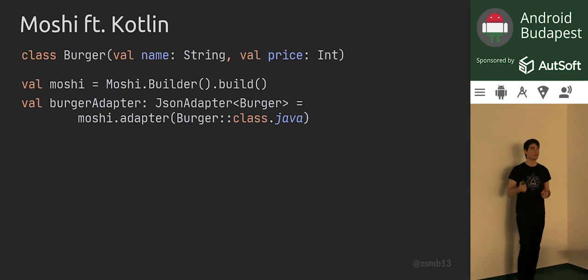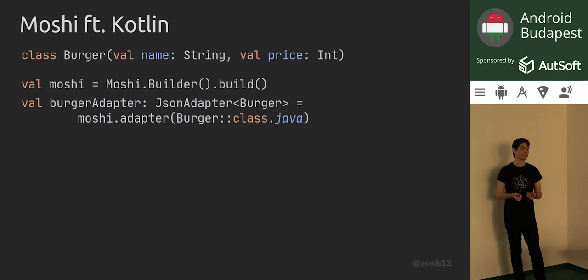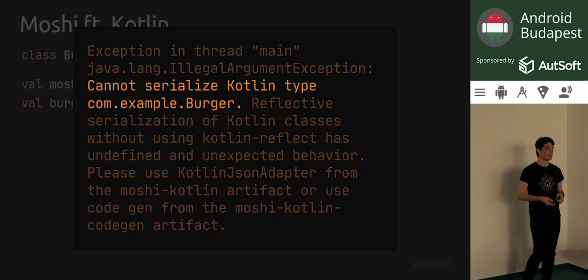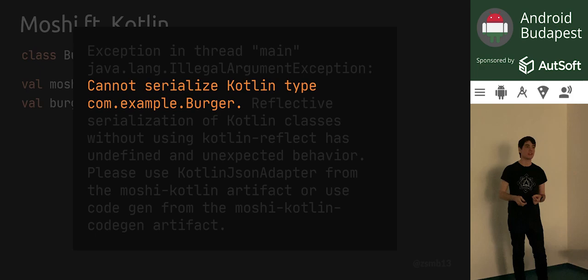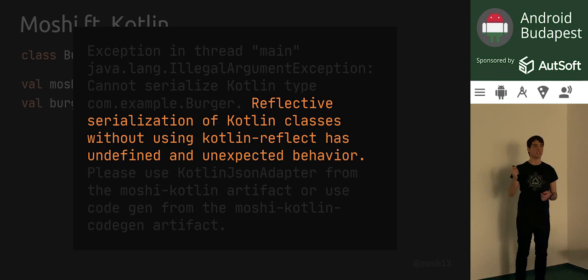I started by serializing a Java class — why not migrate it to Kotlin and see how that works? If we build a Moshi instance and get an adapter for a Kotlin class with our current setup, this is just going to crash on us with a very elaborate exception, which is actually a good thing because it explains the situation exactly. Moshi tells us that it's unable to serialize the burger type defined as a Kotlin class, because it doesn't support reflection-based serialization of Kotlin classes without using Kotlin Reflect.